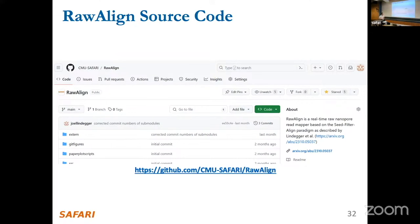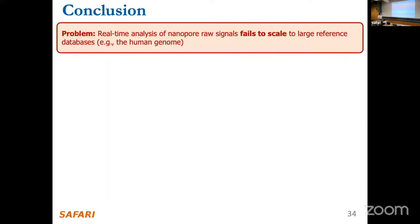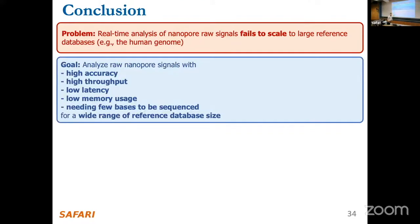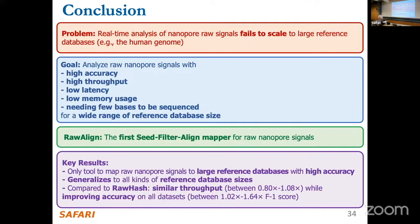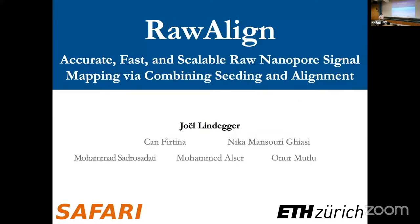To conclude: real-time raw signal analysis works fail to scale to large reference genomes. Our goal was to generalize to all kinds of reference genomes while fulfilling all target metrics. We proposed RawAlign, the first raw signal mapper following the seed-filter-align paradigm. It does well on large reference databases with high accuracy and generalizes well across all reference database sizes and metrics. Compared to RawHash, we maintain similar throughput while significantly improving accuracy.